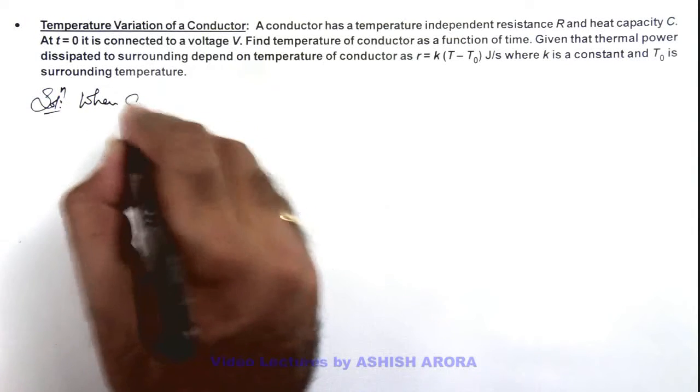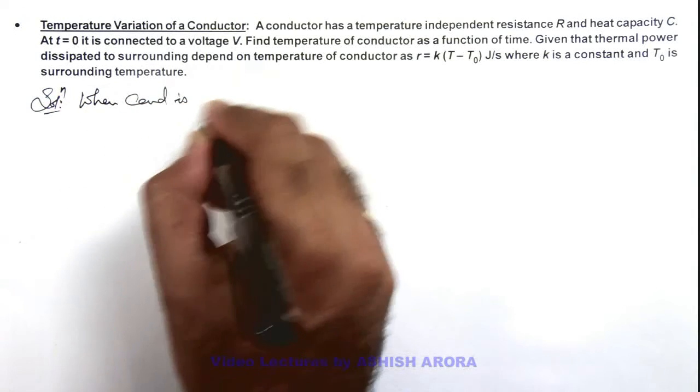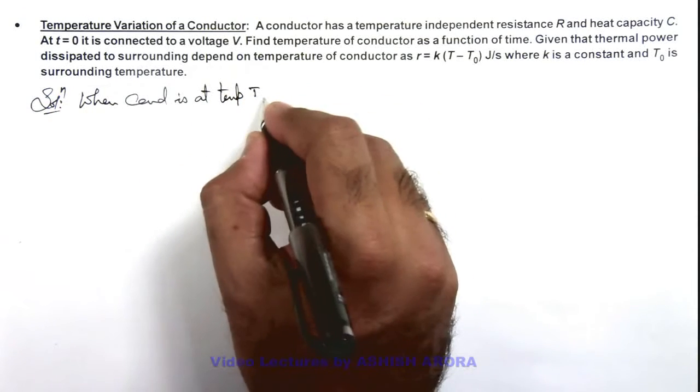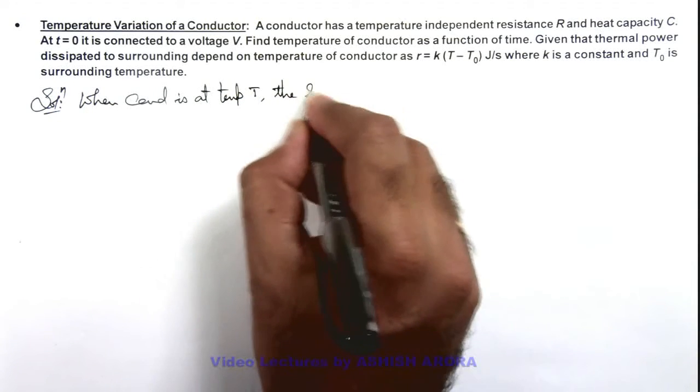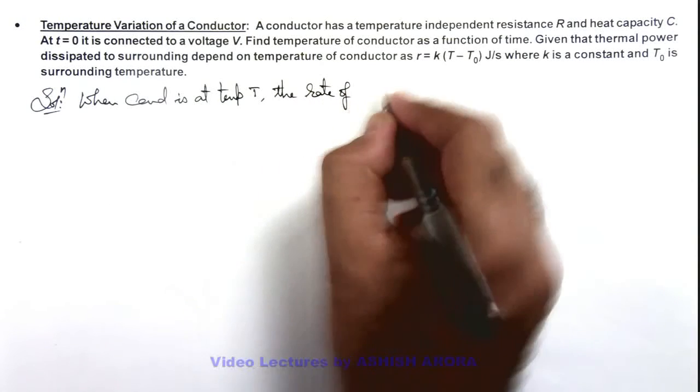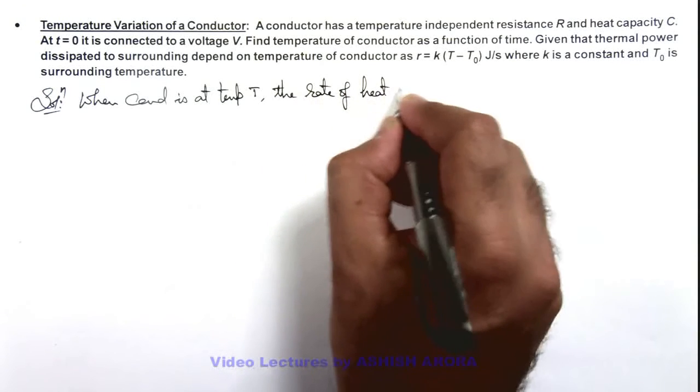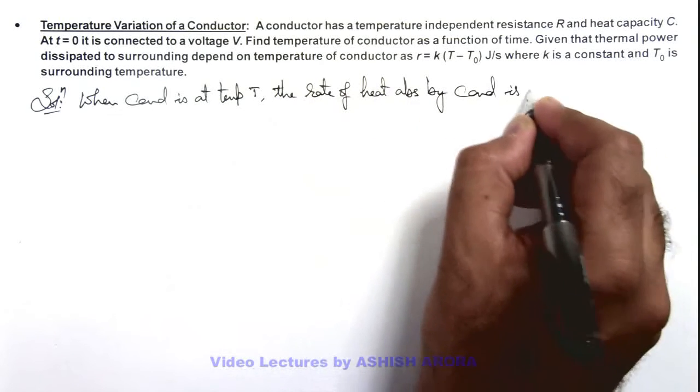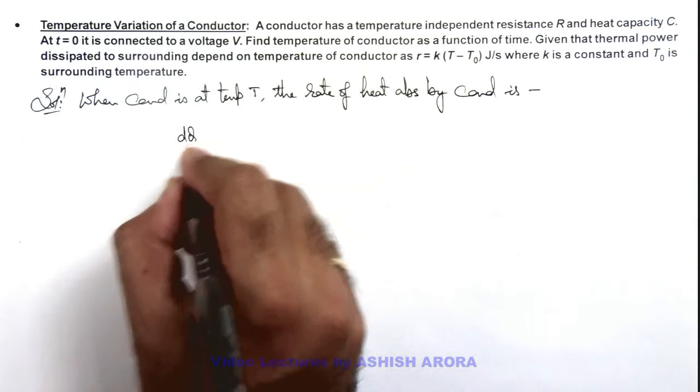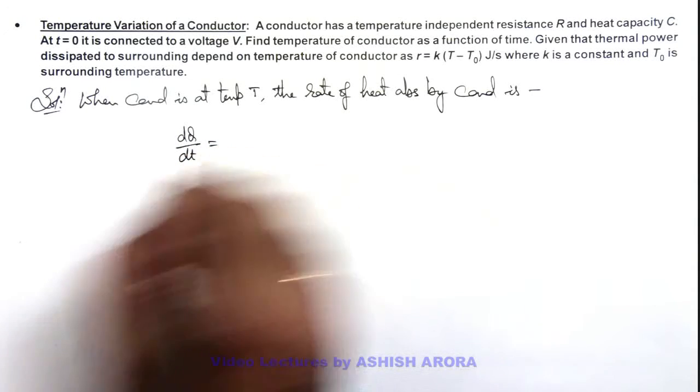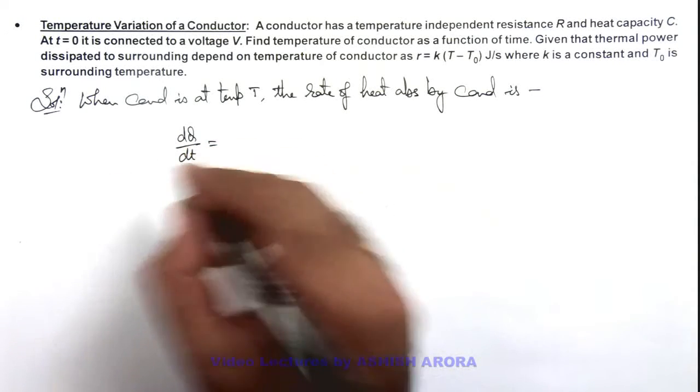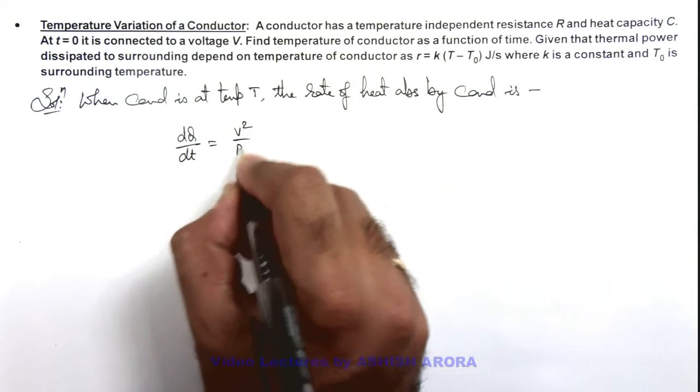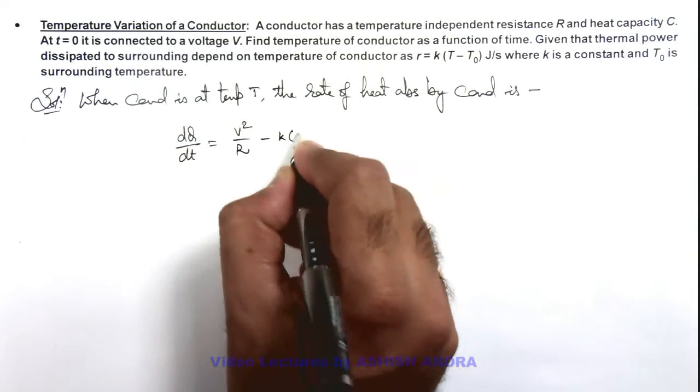Conductor is at temperature T. The rate of heat absorption by conductor is - this can be written as dQ/dt, which is the rate of accumulation of heat within the conductor, which can be written as V²/R minus k(T - T₀).